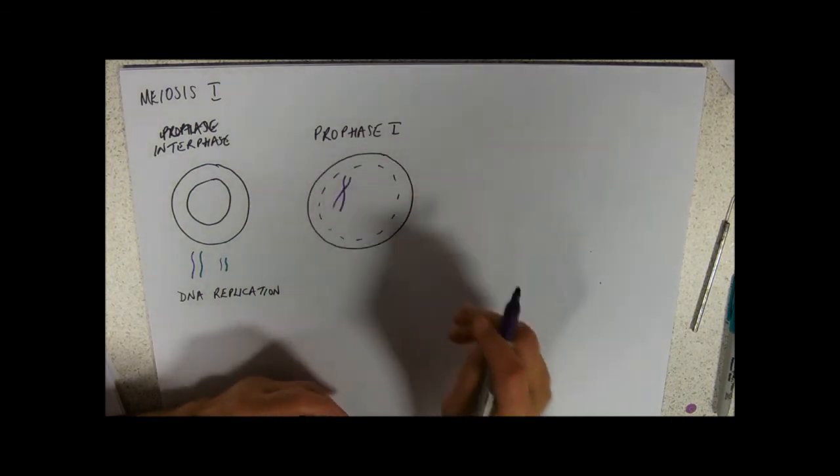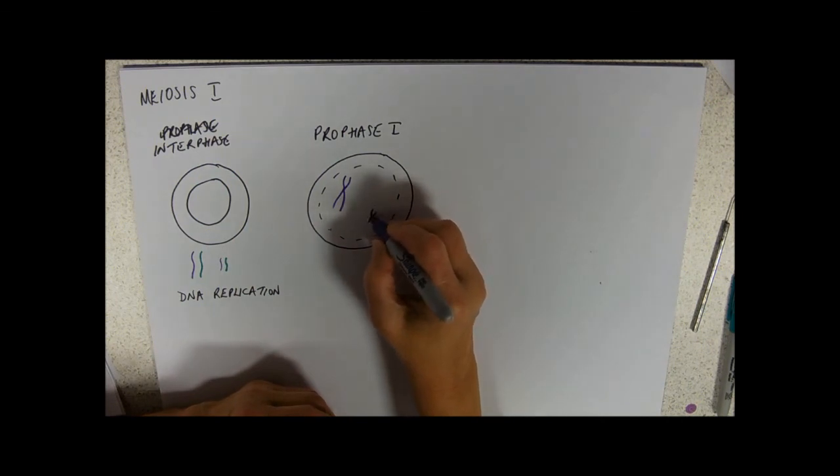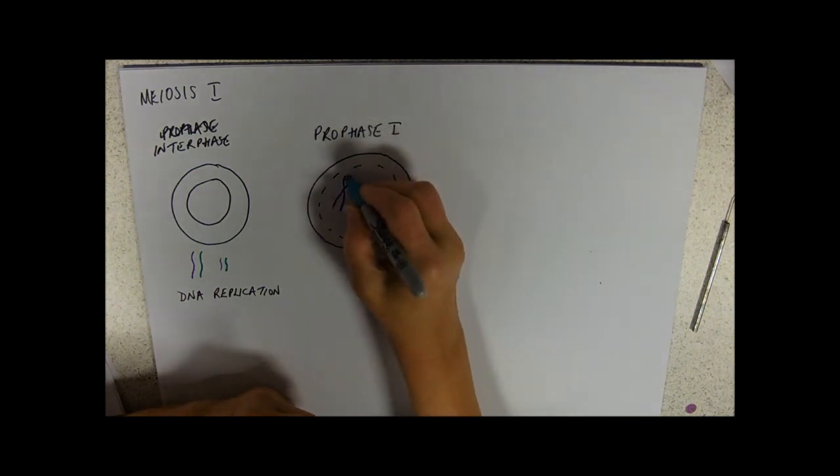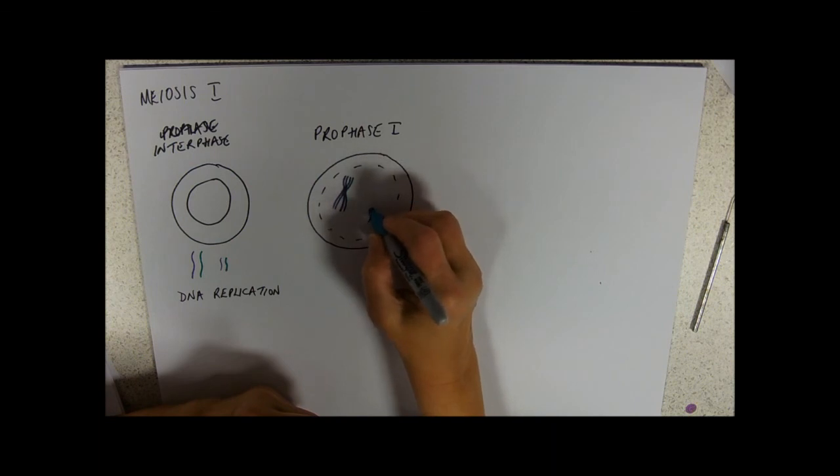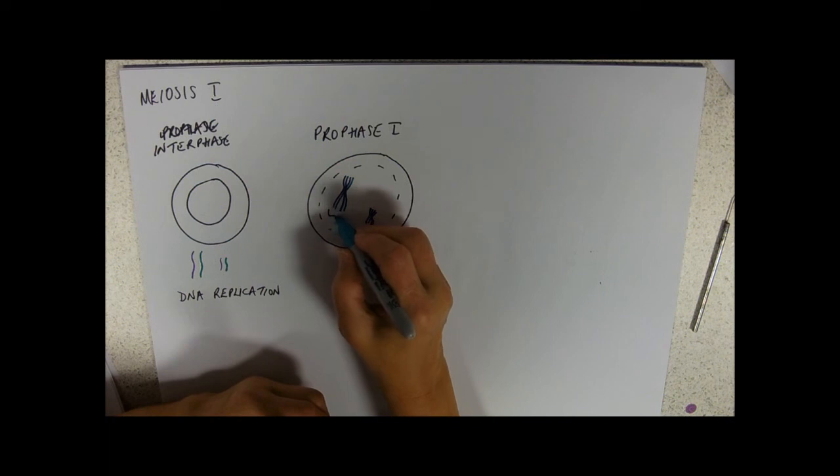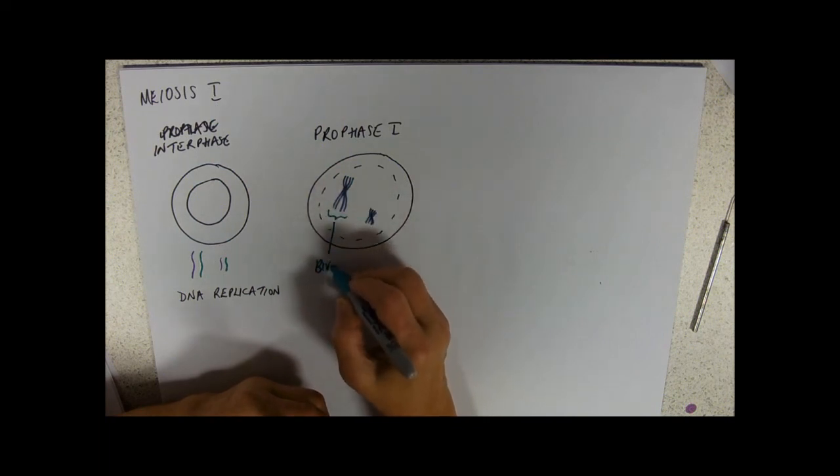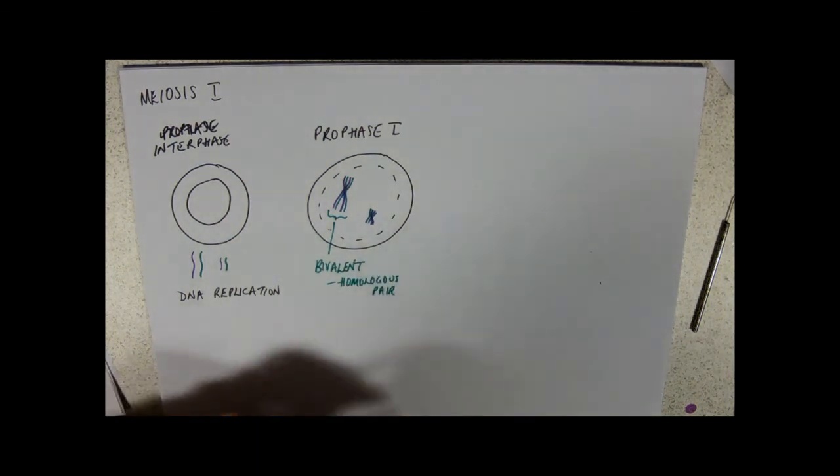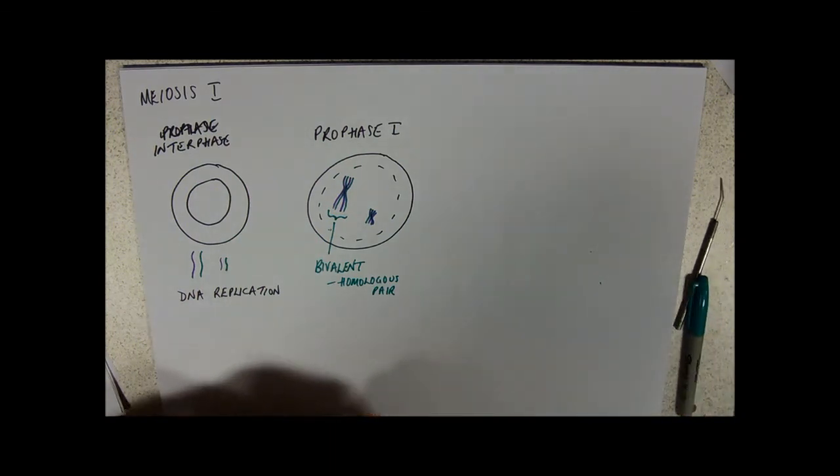One of our key events, is that our chromosomes, there's my purple one, and my teal-coloured one, come very close together. And they form what's called a bivalent. So, this is the homologous pairs lined up together.